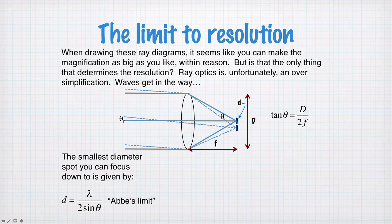Where theta is this angle here. So it's the angle, the maximum angle for one ray which comes in from the top of the lens compared to the optical axis. So it's half the angle subtended by this cone of light in other words. So this is Abbe's limit.